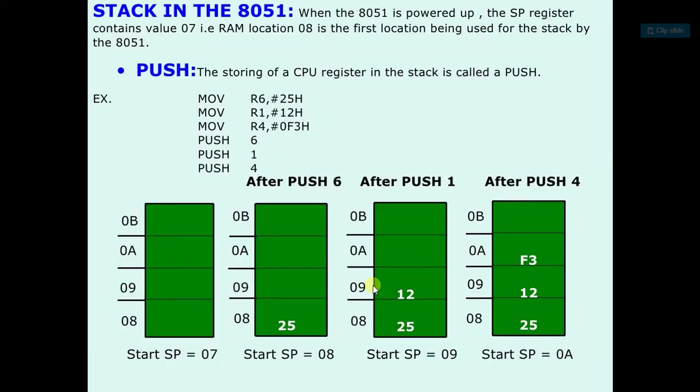So see here, when 8051 is powered up, the stack pointer register contains the value 07. This is the default value. RAM location 08 is the first location being used for the stack by 8051.